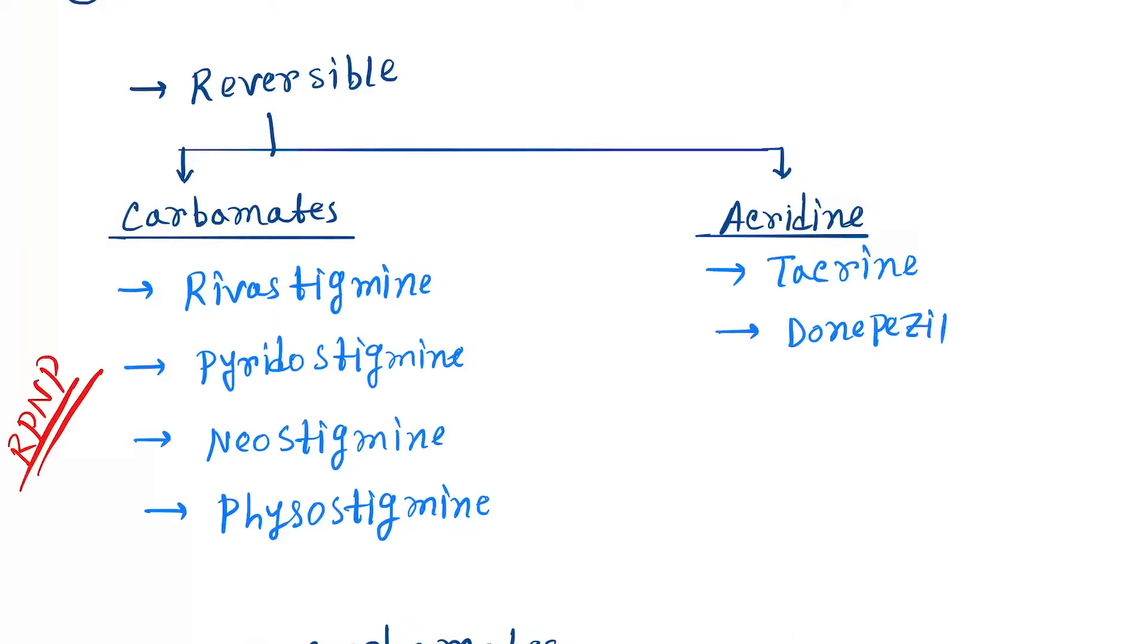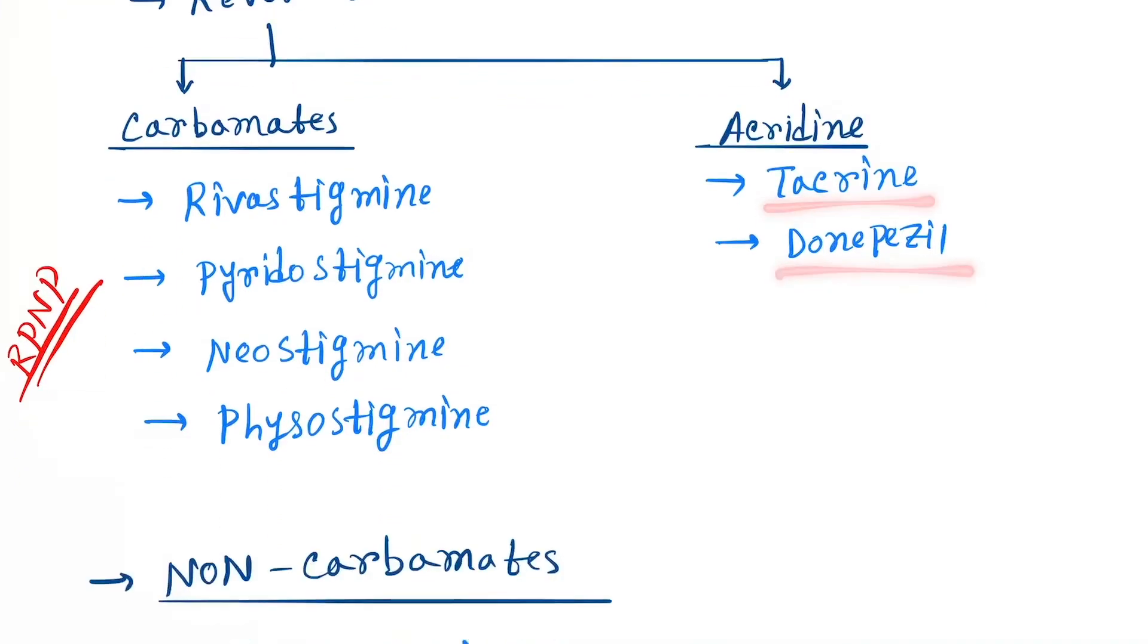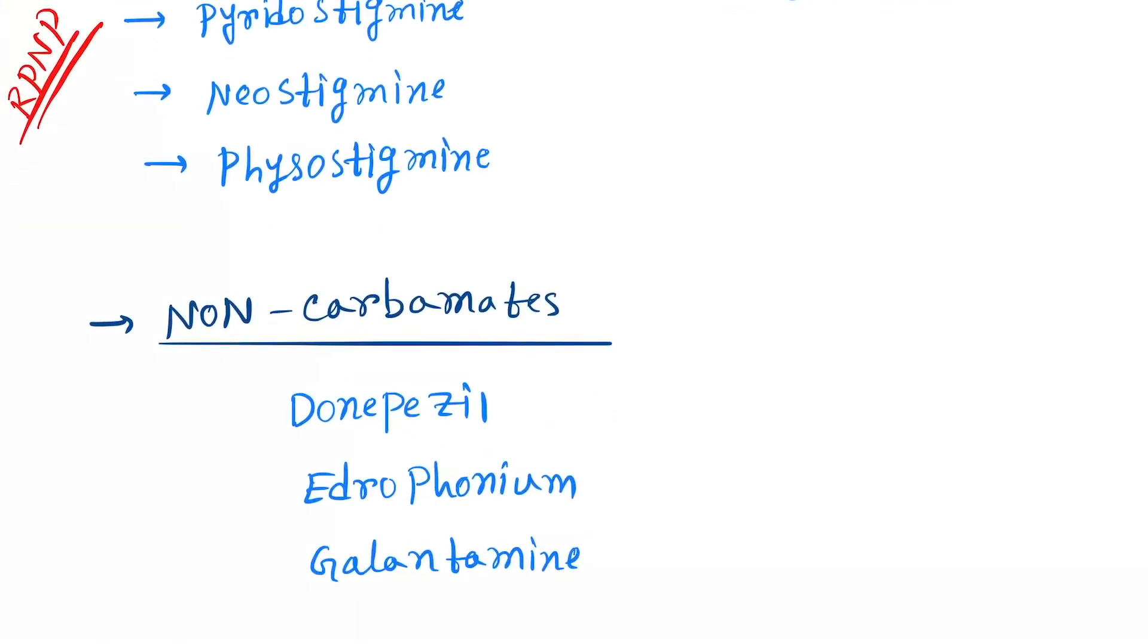R for Rivastigmine, P for Pyridostigmine, N for Neostigmine, P for Physostigmine. And for acridine: T for Tacrine, D for Donepezil. Next is non-carbamates. Remember DEG: D for Donepezil, E for Edrophonium, G for Galantamine.